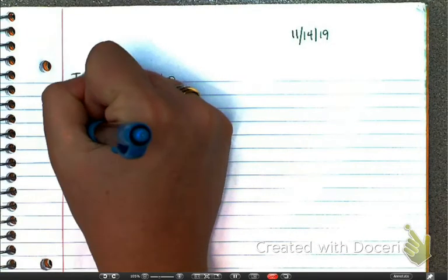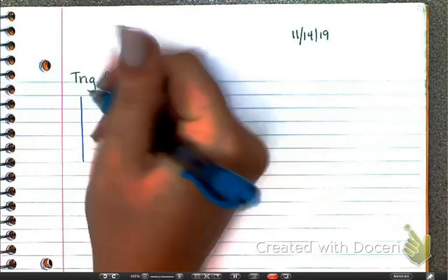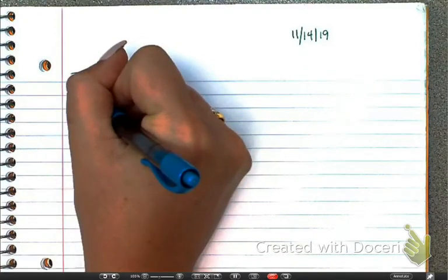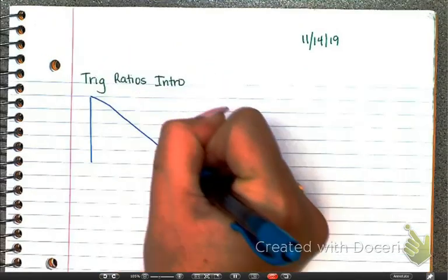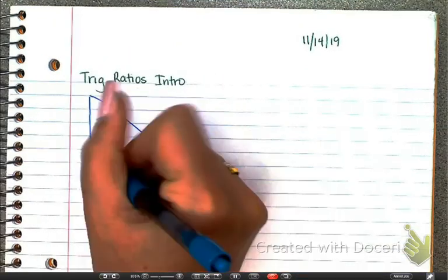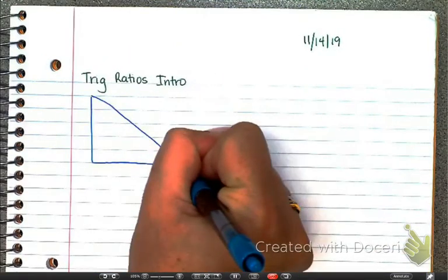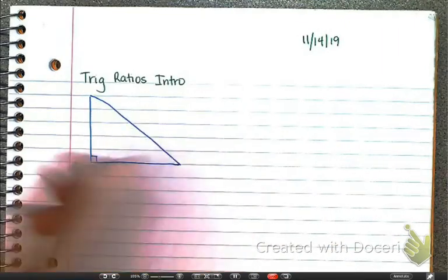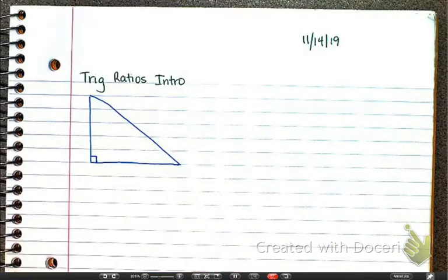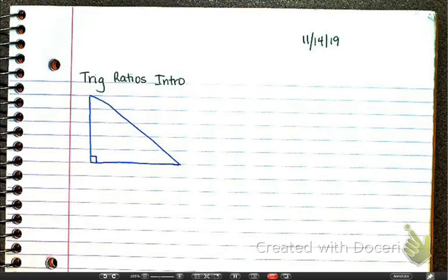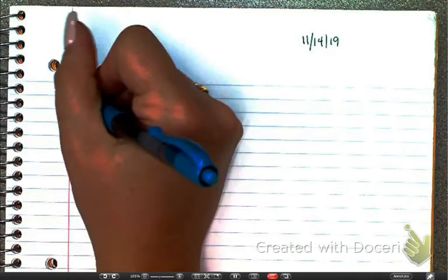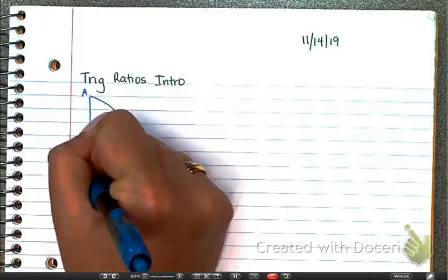Let's start by drawing a right triangle. For trig, all of our triangles must be right triangles. If you don't have a right triangle, you cannot use trig.